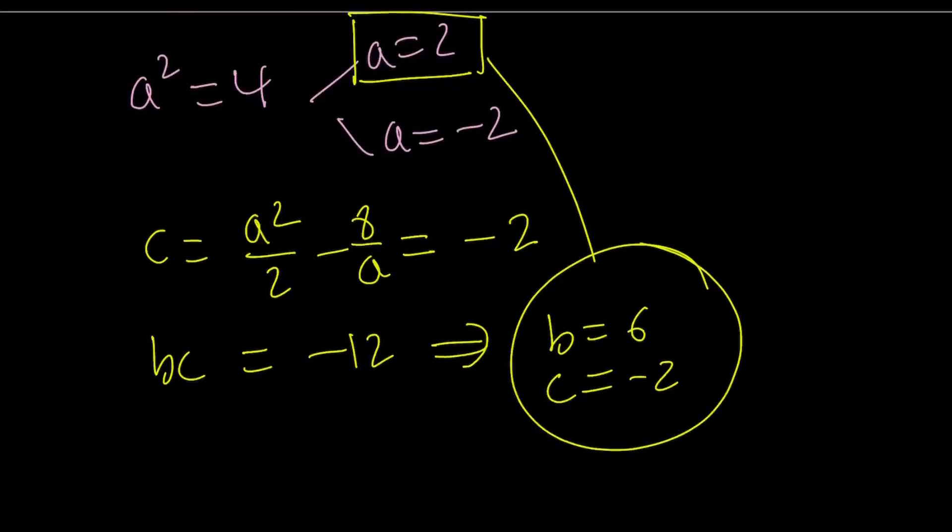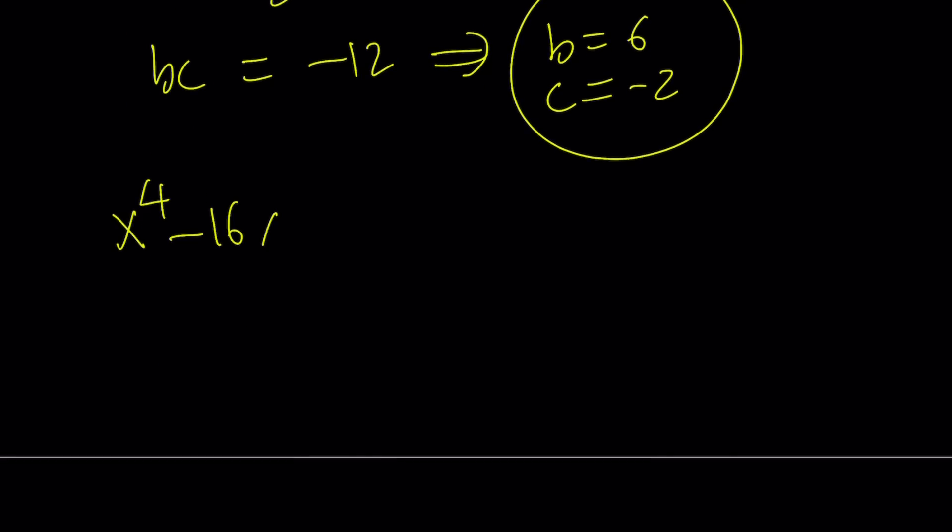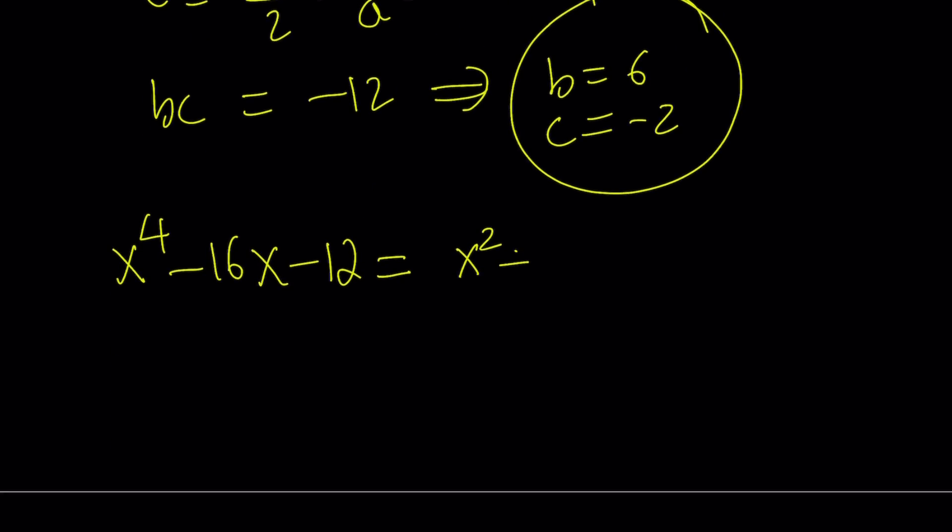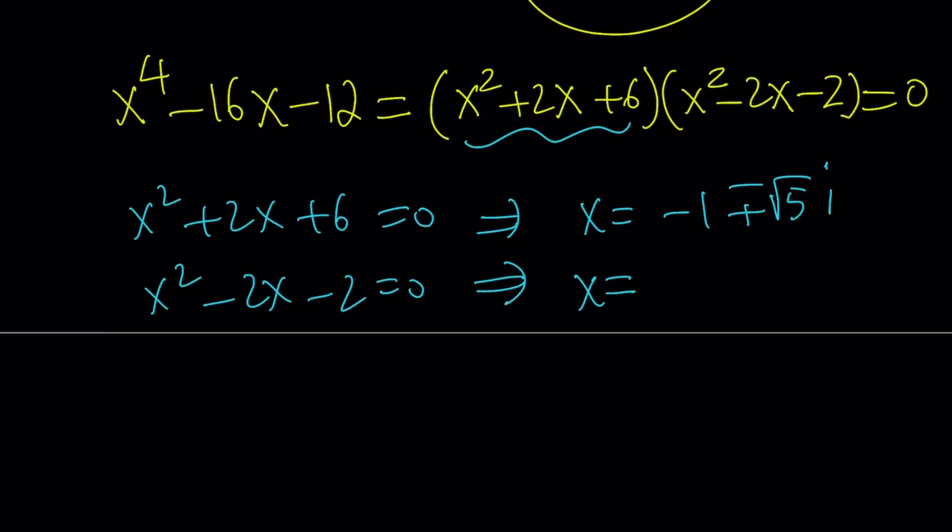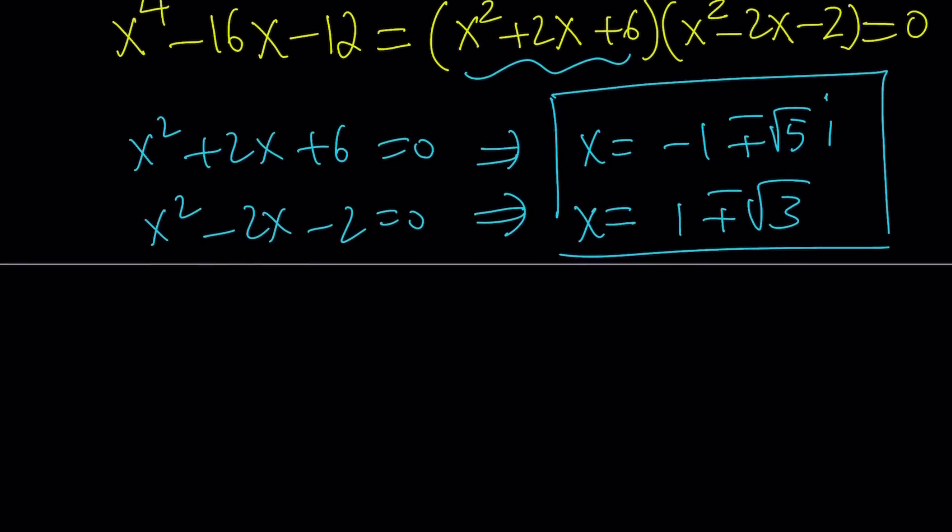So b equals 6 and c equals negative 2 and a equals 2. Let's put it all together in our original expression where we factor the quartic. This allows us to write our quartic as x squared plus 2x plus 6 times x squared minus 2x minus 2. Set the whole thing equal to 0. Let's find the solutions by using the quadratic formula. If x squared plus 2x plus 6 is equal to 0, you're going to get x equals negative 1 plus minus square root of 5i. And the other one is going to give you real solutions, 1 plus minus root 3. So those are the solutions, and they're all valid because this is a quartic.